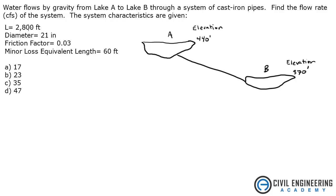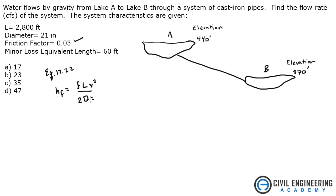So how are we going to solve this? We are given a friction factor — what equations use that? The first one that pops in my head is the Darcy-Weisbach equation, equation 17.22, which states that head loss due to friction equals friction factor times length times velocity squared, divided by 2 times diameter times gravity. This length also needs to include the minor losses — all the elbows in the line or anything causing a loss — which adds an equivalent length to the pipe. Sometimes you have to solve for that; here they are telling you what it is.